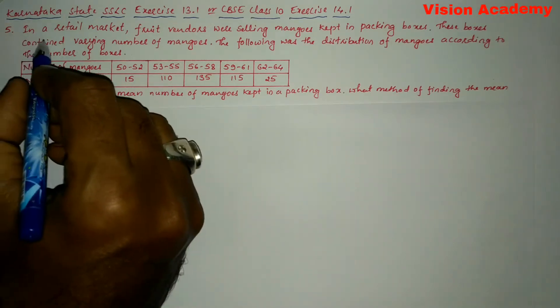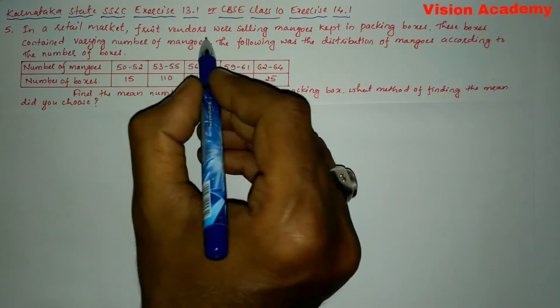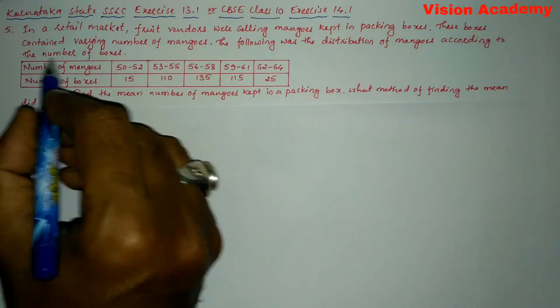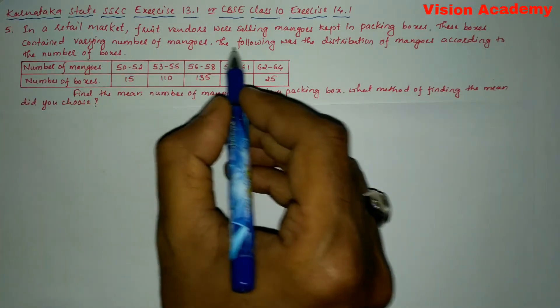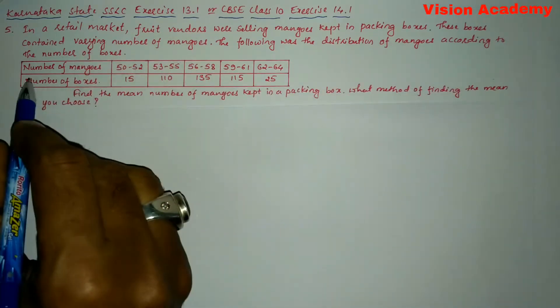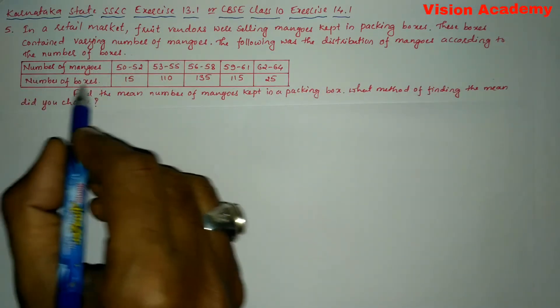Question number five. In a retail market, fruit vendors were selling mangoes kept in packing boxes. These boxes contained varying number of mangoes. The following was the distribution of mangoes according to the number of boxes.